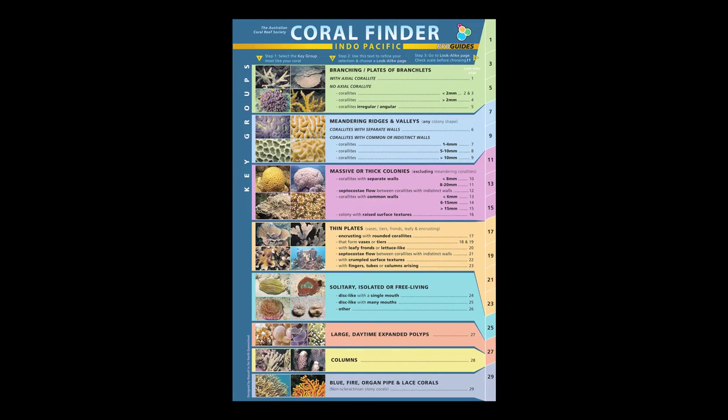Now that we know the basic anatomy of a coral, we need to know the anatomy of the Coral Finder itself. The front page is known as the key page. It classifies the world of hard corals by shape, form, texture, and life habit.